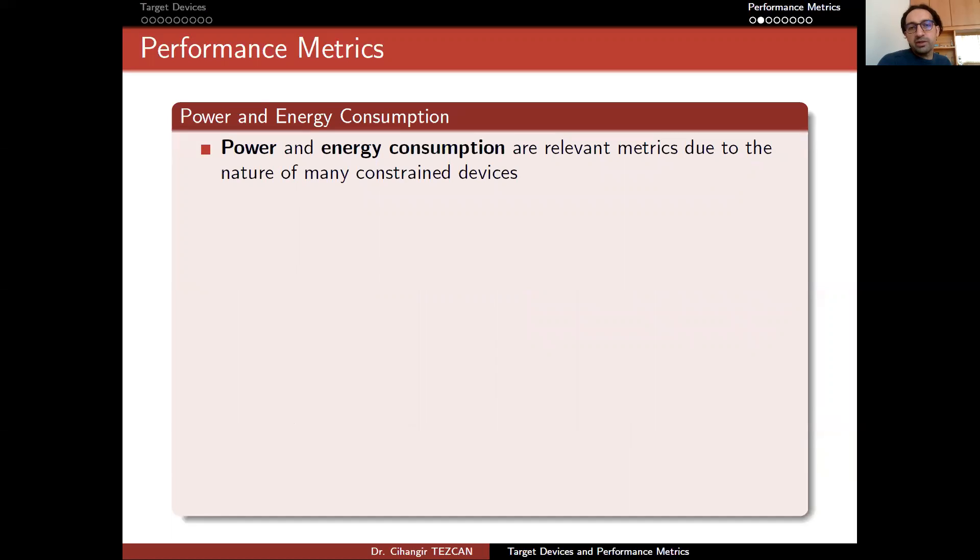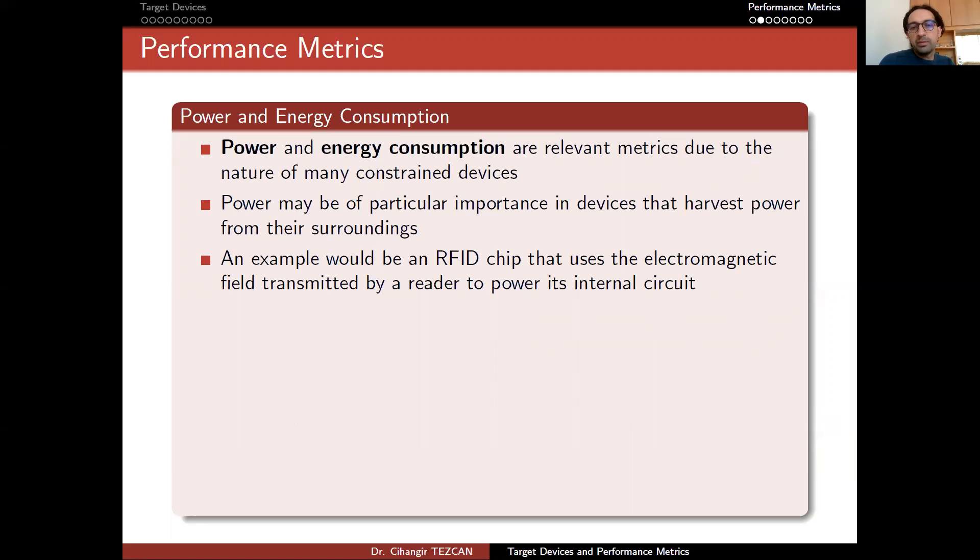Power and energy consumption are relevant metrics due to the nature of many constrained devices. Power may be of particular importance in devices that harvest power from their surroundings, like smart cards. An example would be an RFID chip that uses the electromagnetic field transmitted by a reader to power its internal circuits.